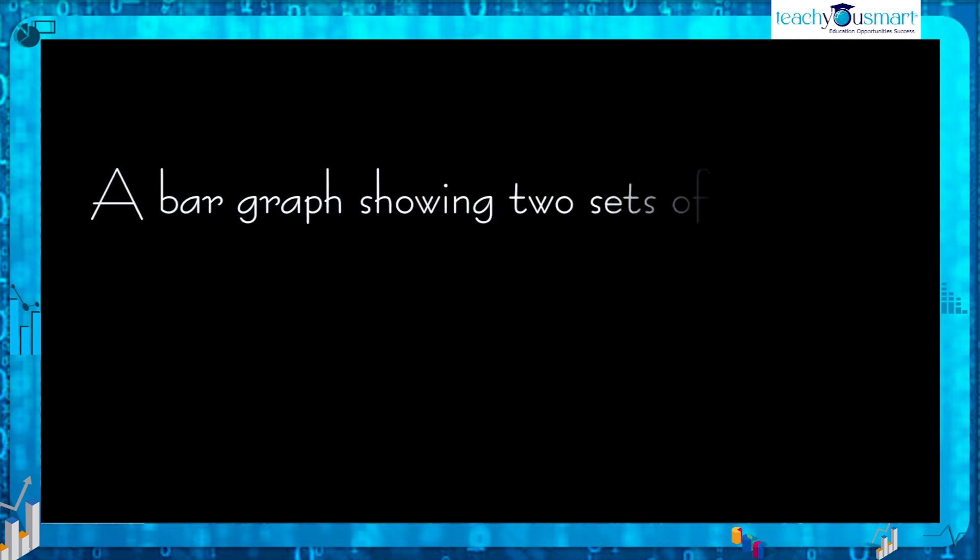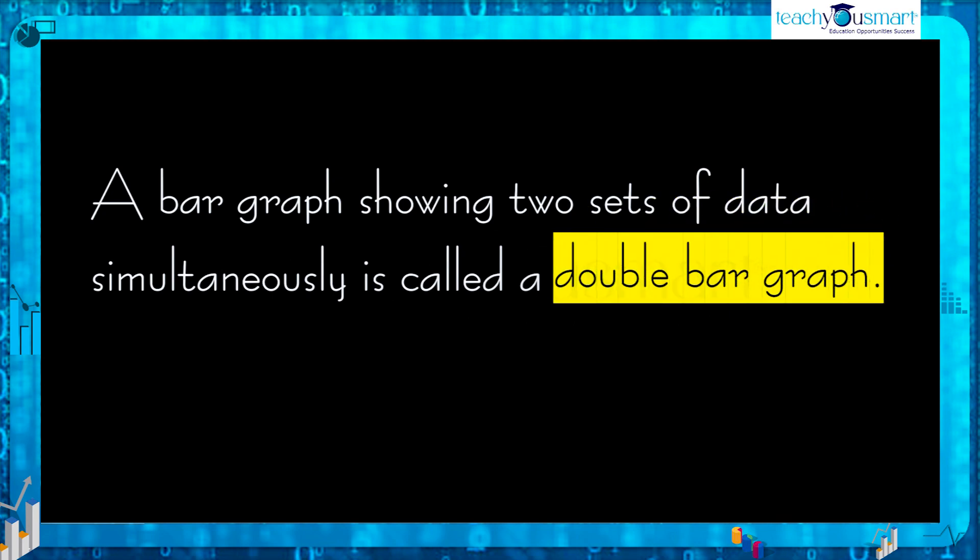A bar graph showing two sets of data simultaneously is called a double bar graph. It helps us to compare two data groups. Drawing a double bar graph is similar to drawing a bar graph.